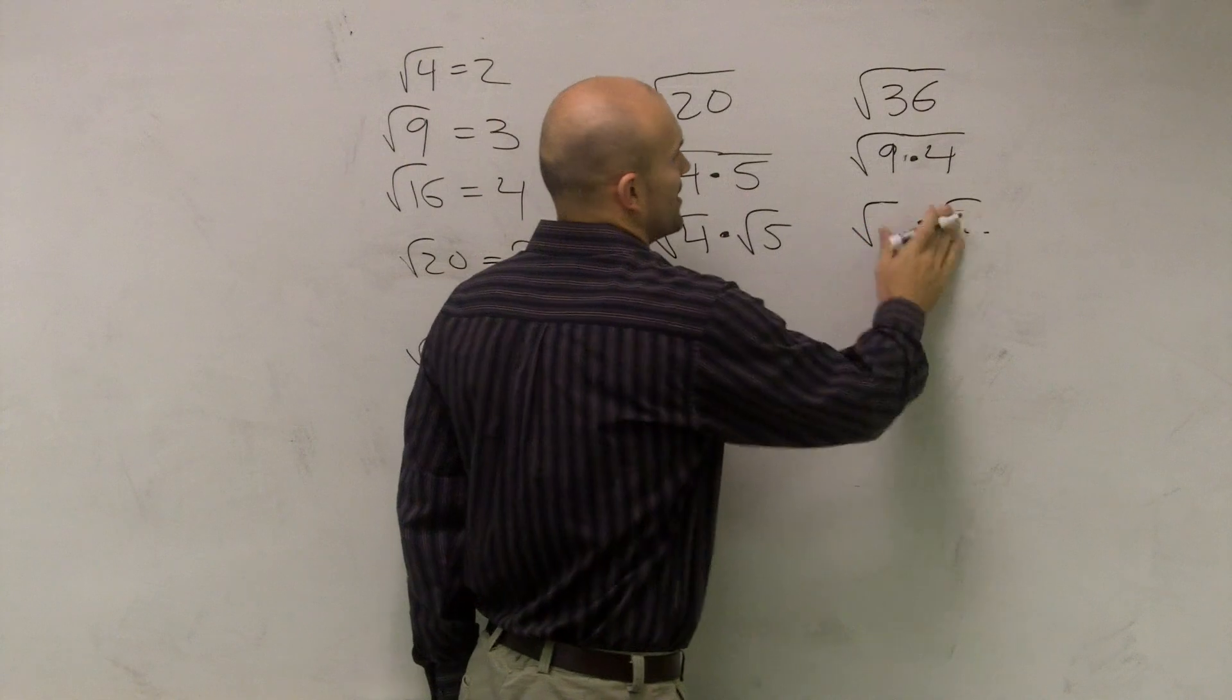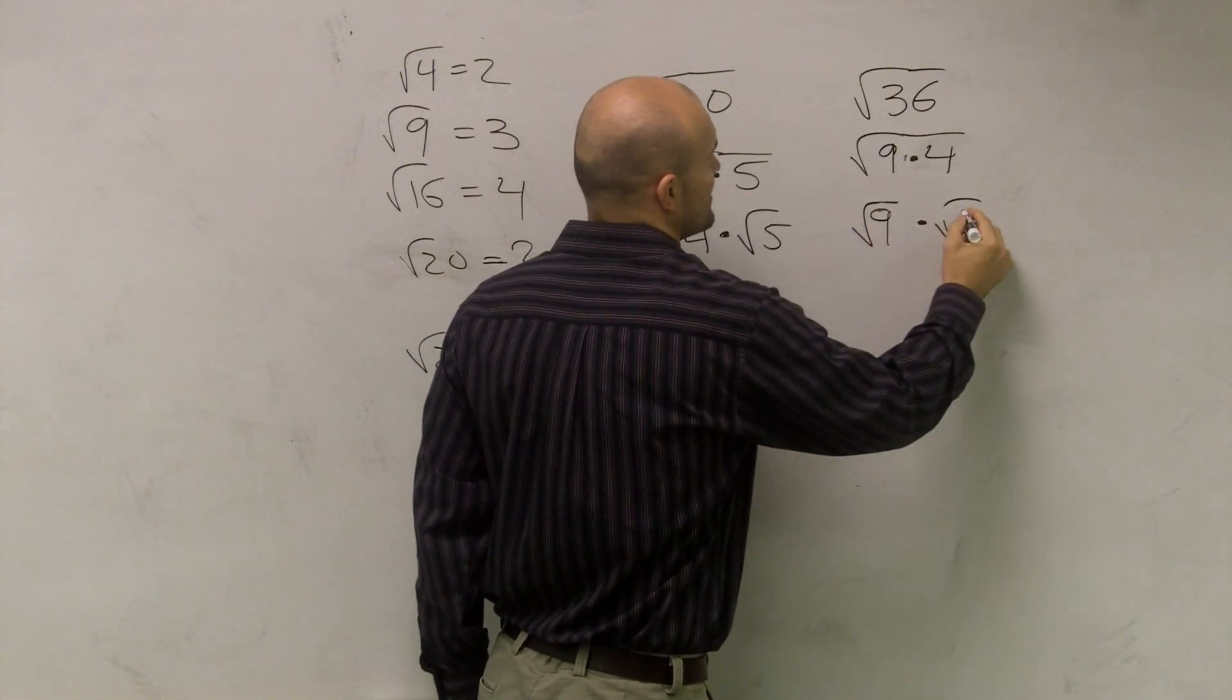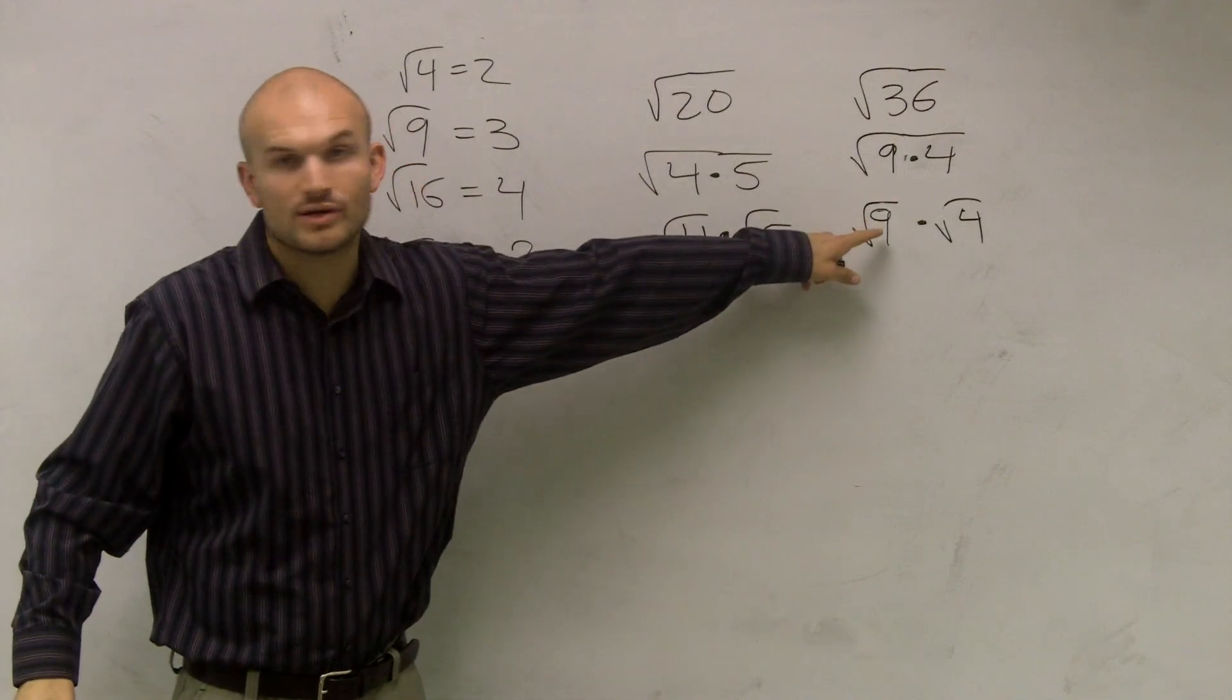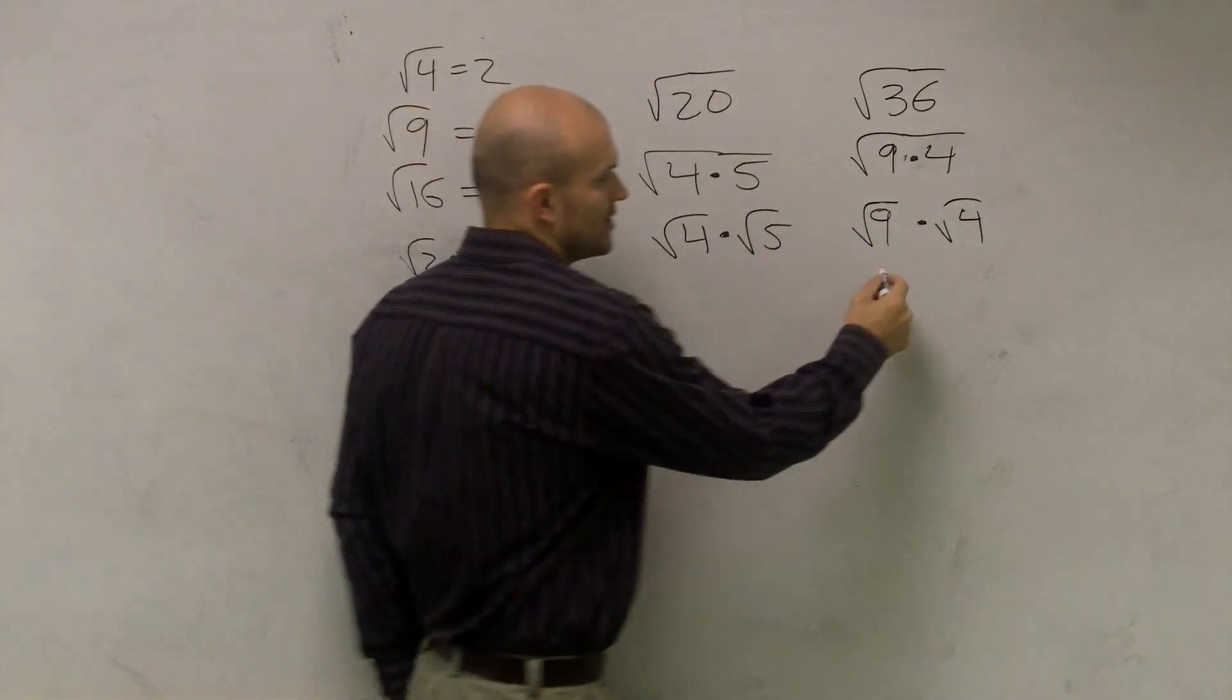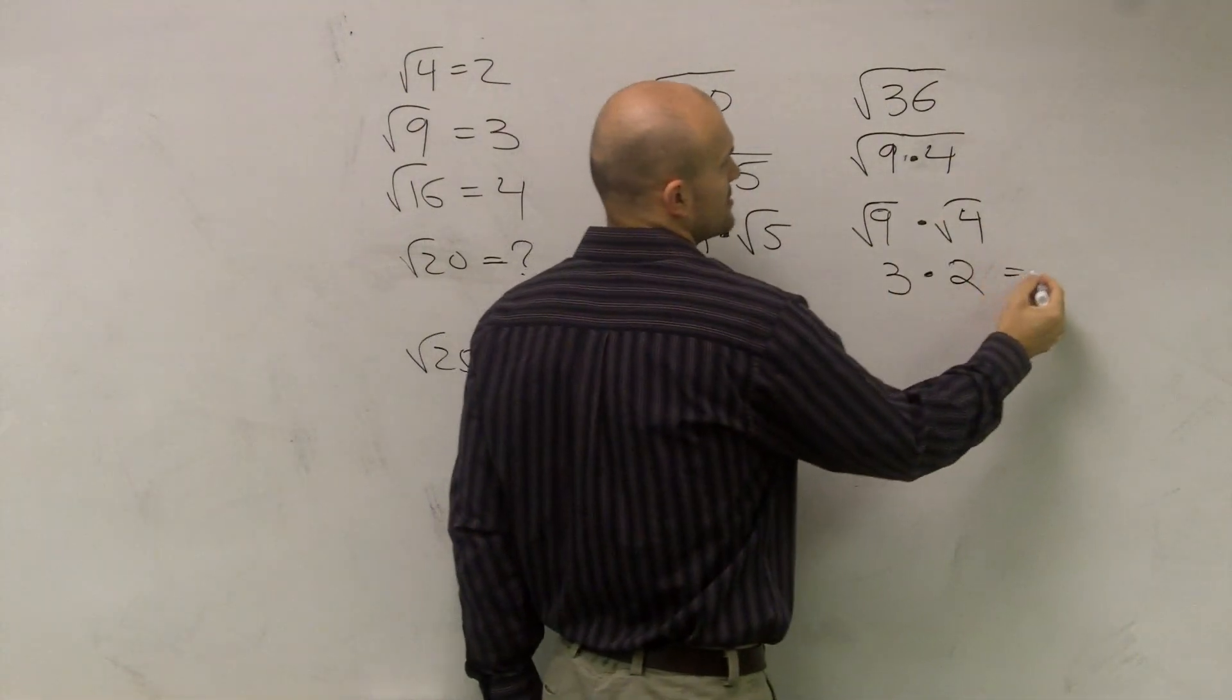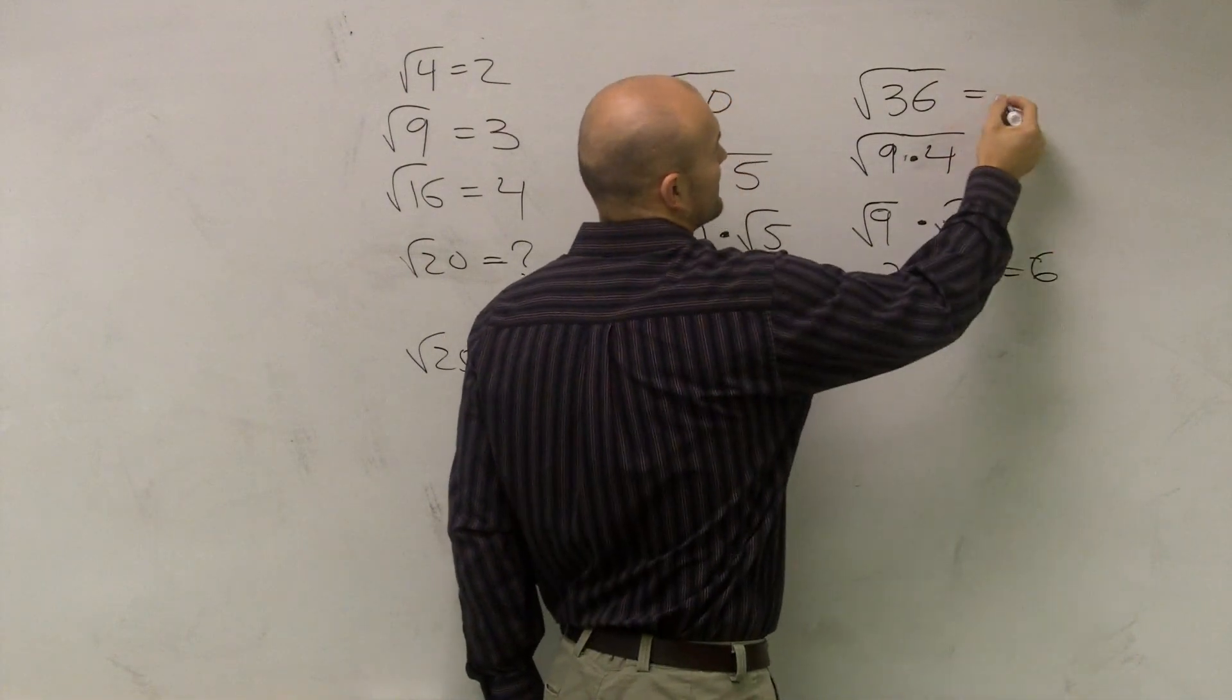That's the square root of 9 times the square root of 4, right? I'm following this process. What's the square root of 9? 3. What's the square root of 4? 2. Sorry, I wrote the wrong thing.